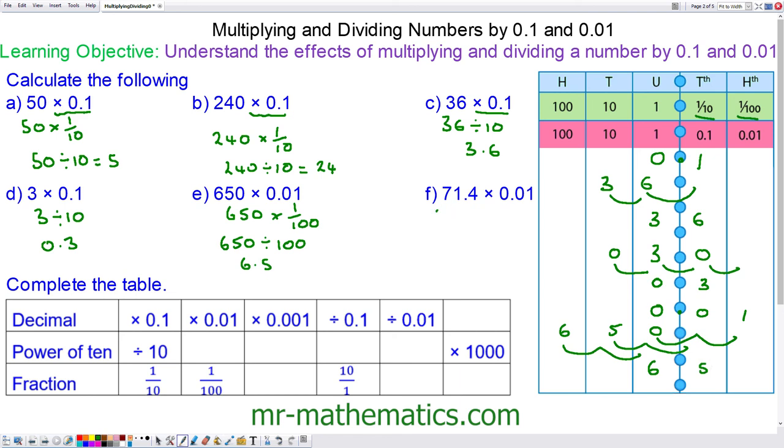Same thing here. 71.4 times 0.01 which is divided by 100. And we have 0.714.